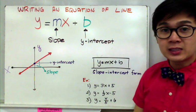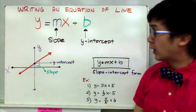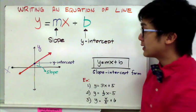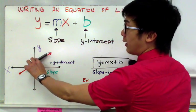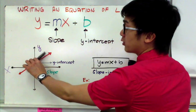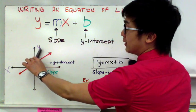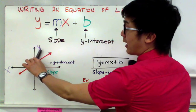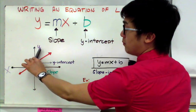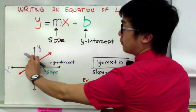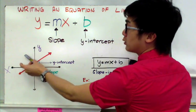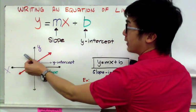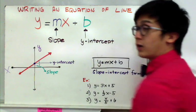The slope is the steepness of your line. It could be as steep as this, or a line could also be steep like this form, or it could also be a negative slope which will give you a line similar to this one.